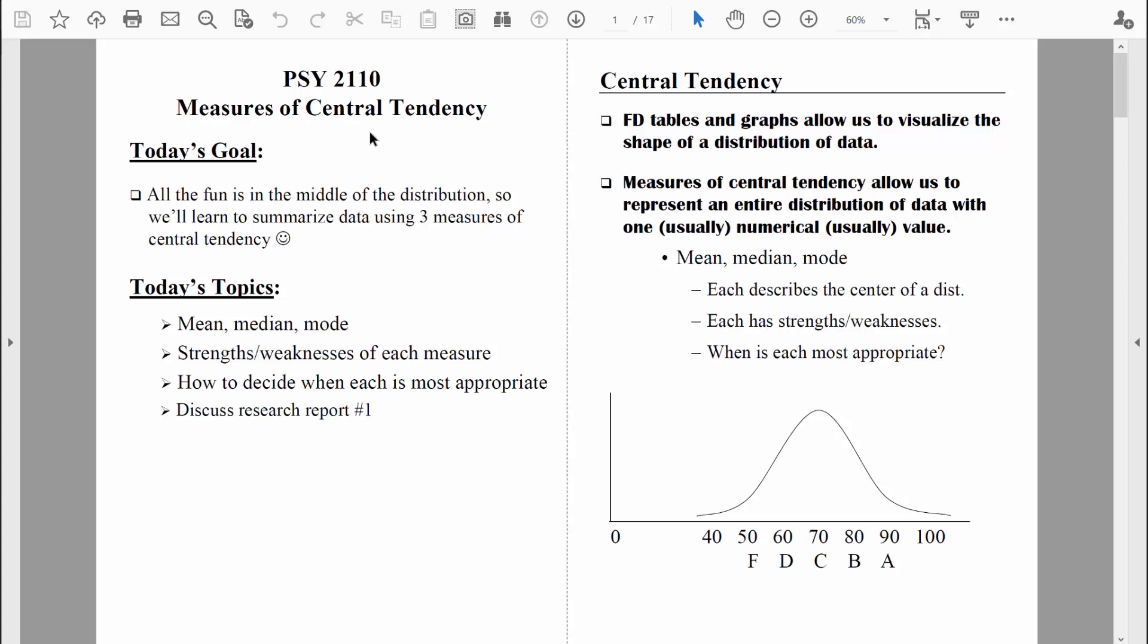Welcome back, everybody. Over the past few videos, we've been talking a lot about measures of central tendency, the mean, the median, and the mode. Let's have one more discussion. This time, let's talk about where you're likely to find each measure on a distribution.